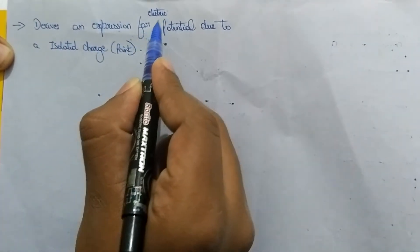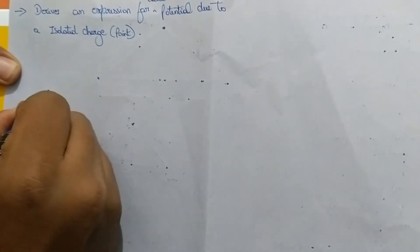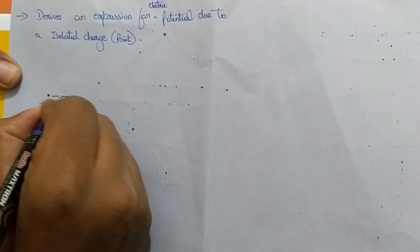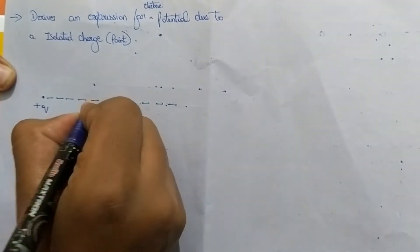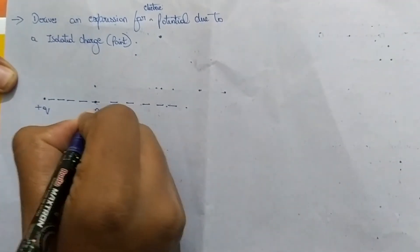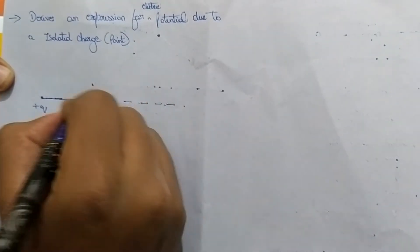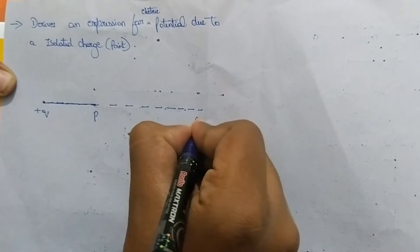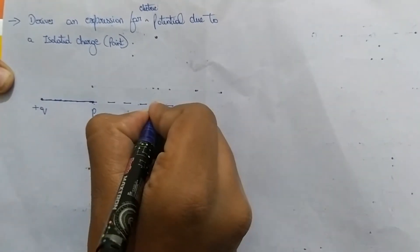Derive an expression for electric potential due to an isolated point charge. Let us consider an isolated point charge plus Q, and this is the actual end of the charge. Let us consider a point P at which the potential of the charge is to be estimated, and let us consider the path till infinity.